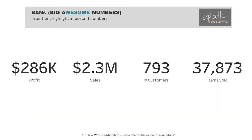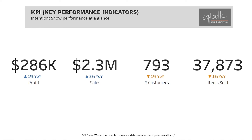There are times when all we need is to highlight certain numbers, and a strategy we can employ is to make these into big, bold fonts. These pre-attentive attributes will direct attention to these numbers. Often we can pair these big numbers with KPIs to add context. KPI stands for Key Performance Indicators. In this example, we can see right away the performance of the metric compared to its last year's performance. We just need to make sure that we do not inundate our visuals with too many indicators. KPIs should be reserved for truly the key indicators that help evaluate performance.